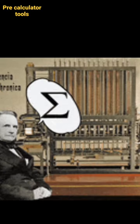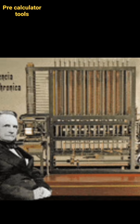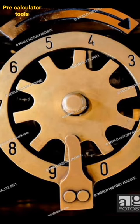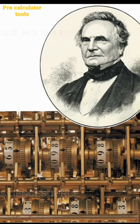Mechanical calculators. Before electronic calculators, mechanical calculators were developed. These devices used gears, levers, and other mechanical components to perform calculations. Examples include the pascaline, invented by Blaise Pascal in the 17th century, and the difference engine, designed by Charles Babbage in the 19th century.